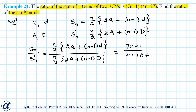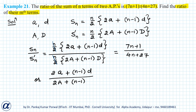I can simplify the left hand side by canceling the n/2 terms, so I get (2a + (n-1)d) divided by (2A + (n-1)D) equals (7n + 1) divided by (4n + 27).